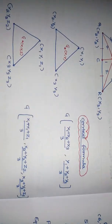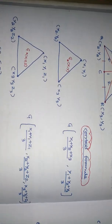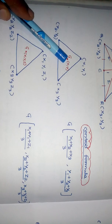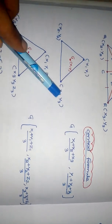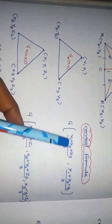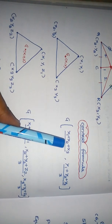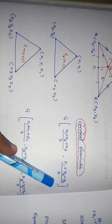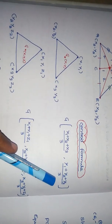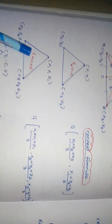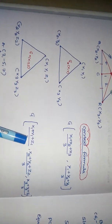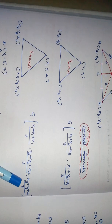In a question, when they ask for the centroid coordinate with three vertices given, the centroid is calculated by (x1 + x2 + x3) / 3 and (y1 + y2 + y3) / 3. If the points are three-dimensional, we use this same formula extended to z.